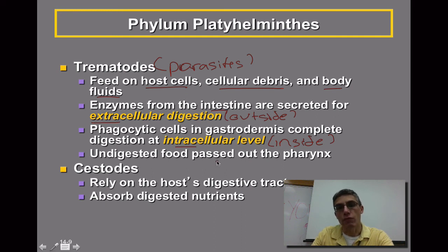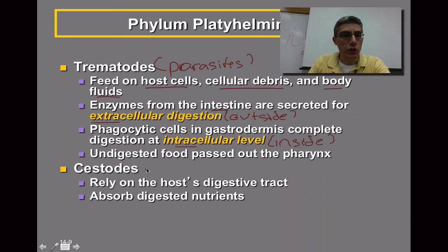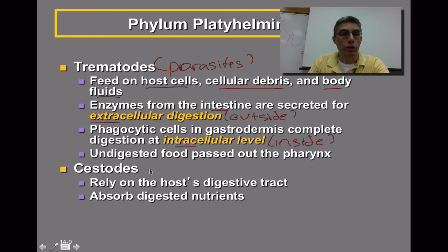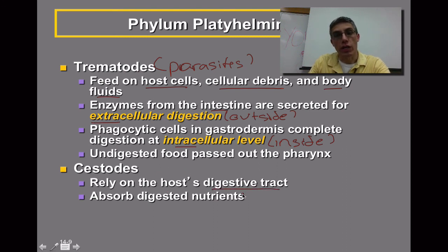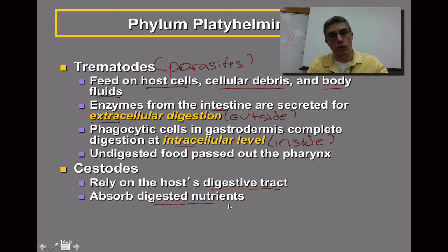Undigested food is passed out through the pharynx of the animal, since these animals have a blind digestive system — any food taken in has to exit through the same opening. The cestodes, or tapeworms, do not have any type of digestive system, as noted earlier. They rely on their host's digestive tract to digest the food, and they simply absorb the digestive nutrients.